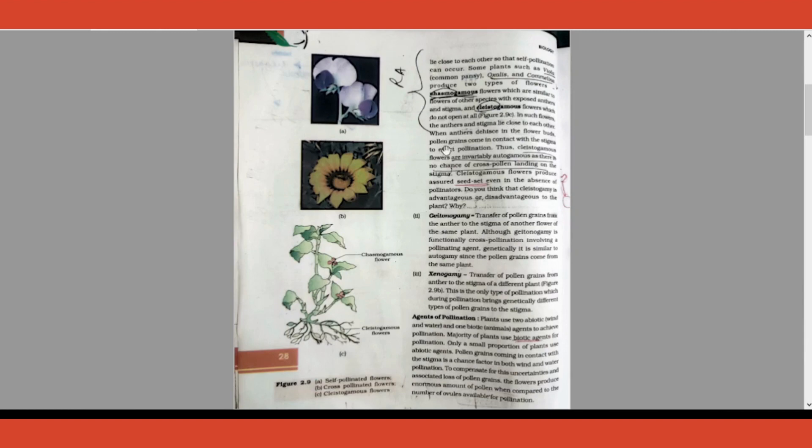You should know what is meant by chasmogamous flower and cleistogamous flower. In certain plants like Oxalis, Viola, and Commelina, there will be two types of flowers for the same plant: one flower which is completely open called chasmogamous, and the other flower which is completely closed called cleistogamous.